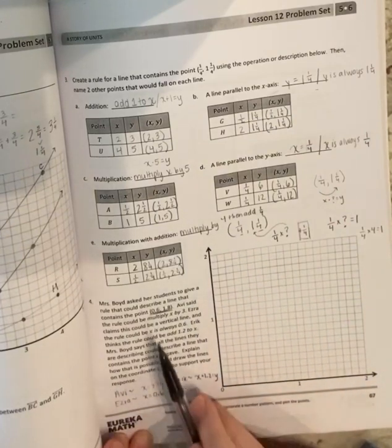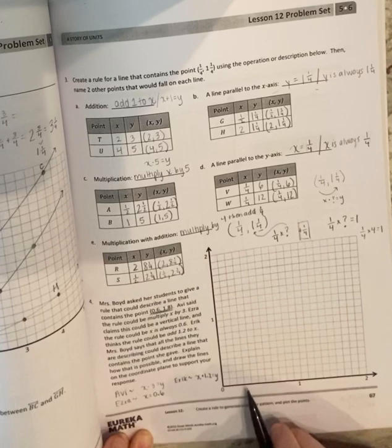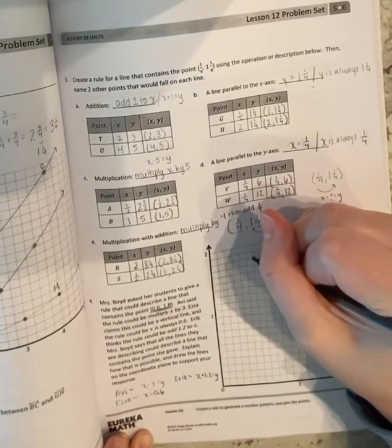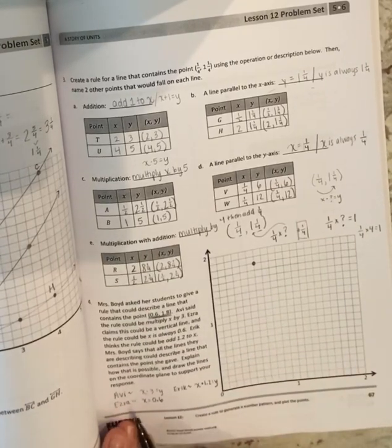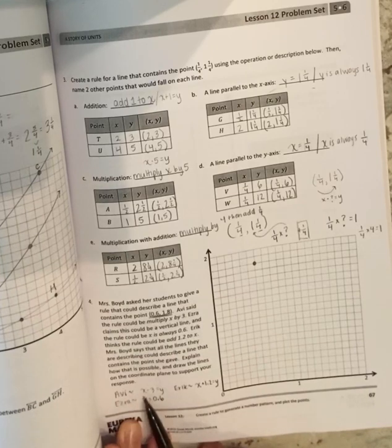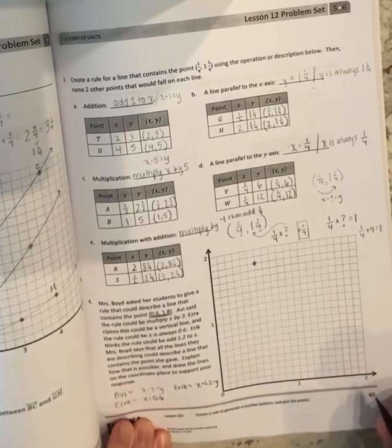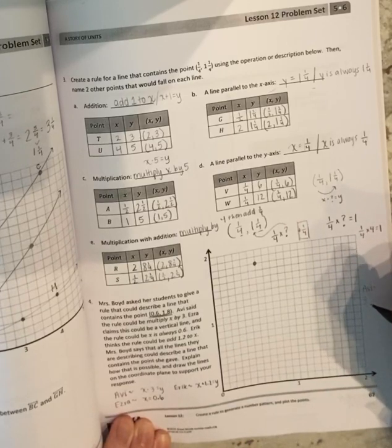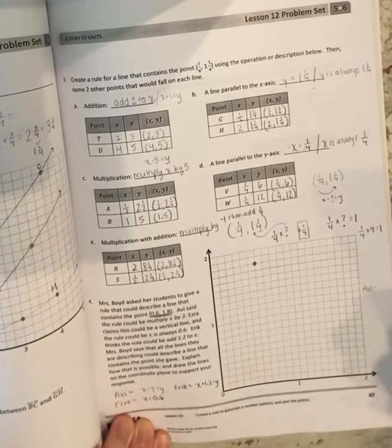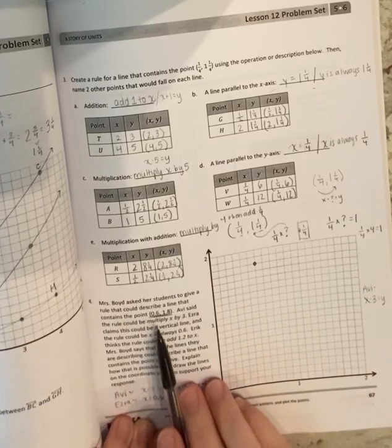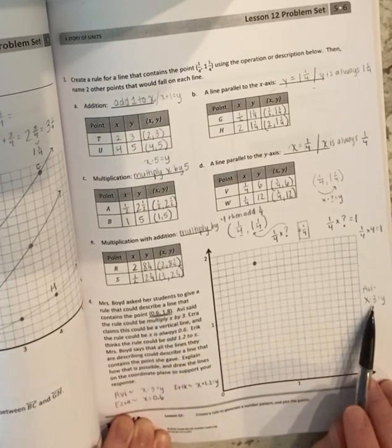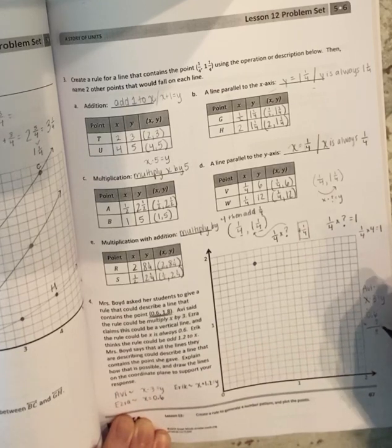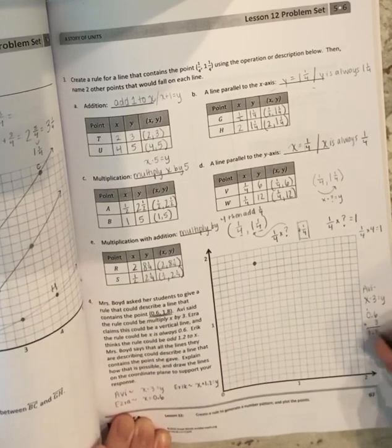So let's first plot this point 0.6, 1.8. So I need to go over one, two, three, four, five, six, and then 1.8. So I know it's going to be two below. Here is that point. So let's plot what they have done. Let's first do Avi. Avi says X times three equals Y. Well, let's first check. Does 0.6 times three equal 1.8? 0.6 times three, 18. That becomes one. Yes. So Avi, we first need to check that he's actually correct.